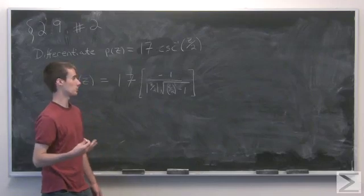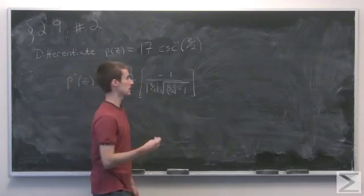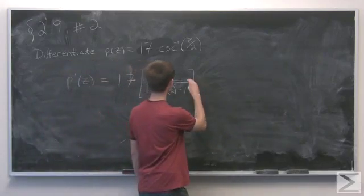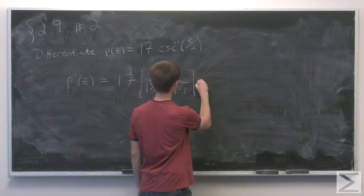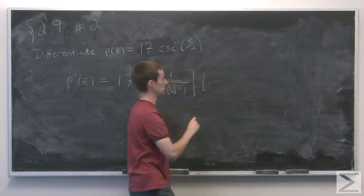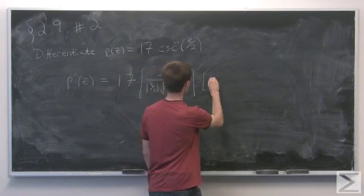Now, we need to multiply by the derivative of the inside of the cosecant function. So multiplied by the derivative of z over 2, which is just 1 half.